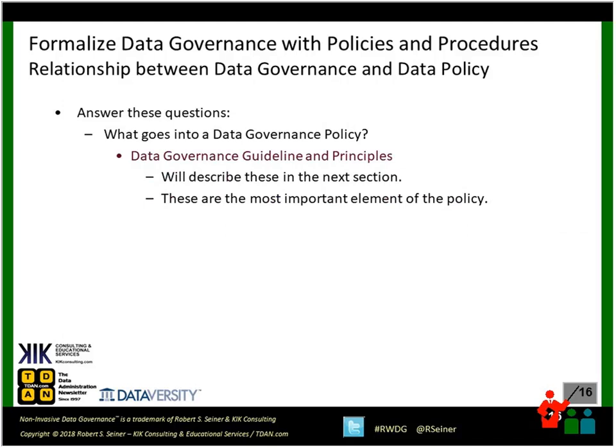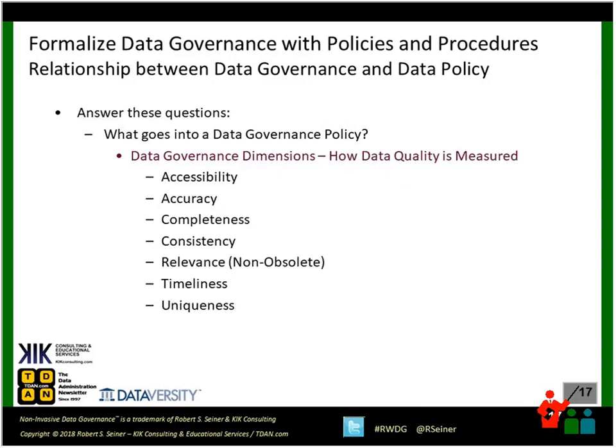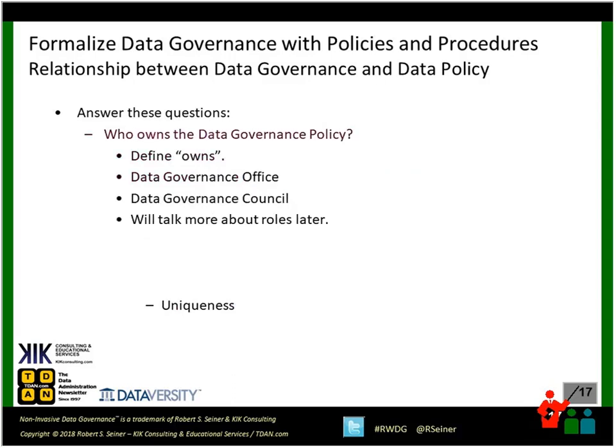Within a data governance policy, organizations often include a policy statement. The guidelines and principles are the core piece of the policy that keeps people on track for following the things spelled out by the data governance policy. I've pulled out four core guidelines that I'll cover specifically. And there are also dimensions to consider — how are we going to measure whether the data governance policy is being followed? Those might be typical dimensions of data quality: how well are people able to access the data, how accurate and complete is the data, how consistent is the data.